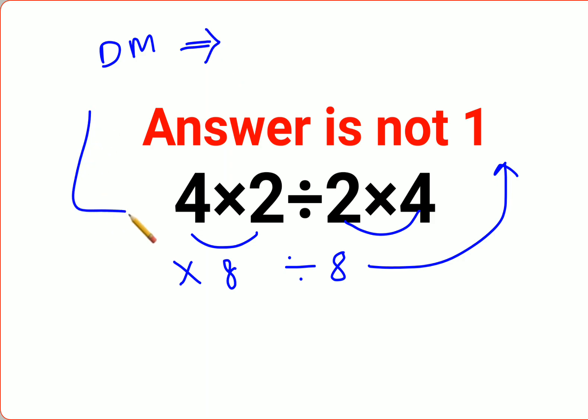So now in this case what you should do is we will do 4 into 2 which is 8, divide by 2 into 4. So next is what first we will do.